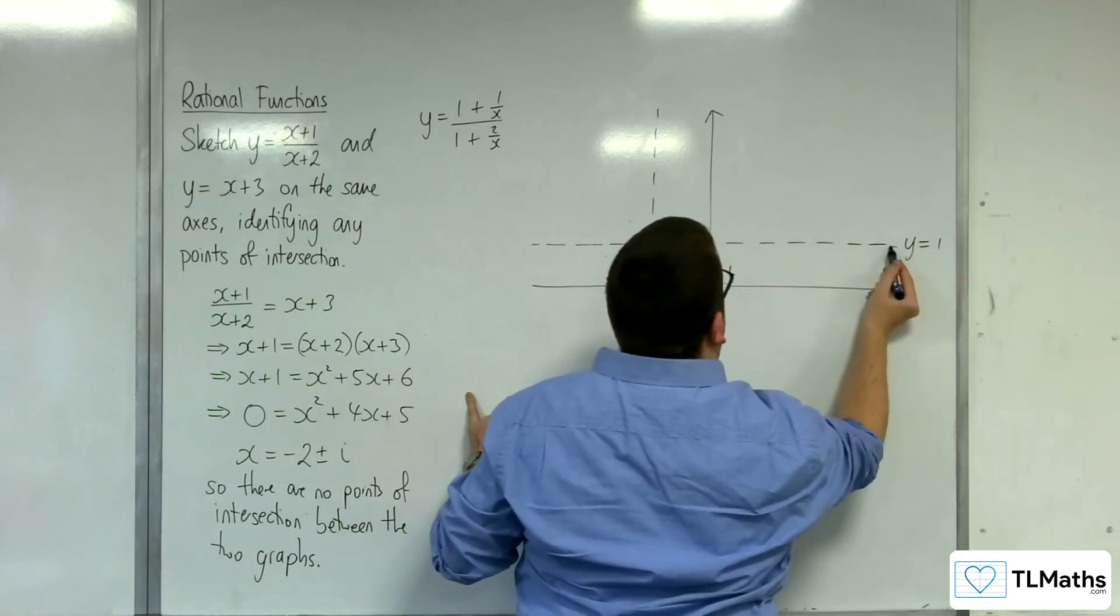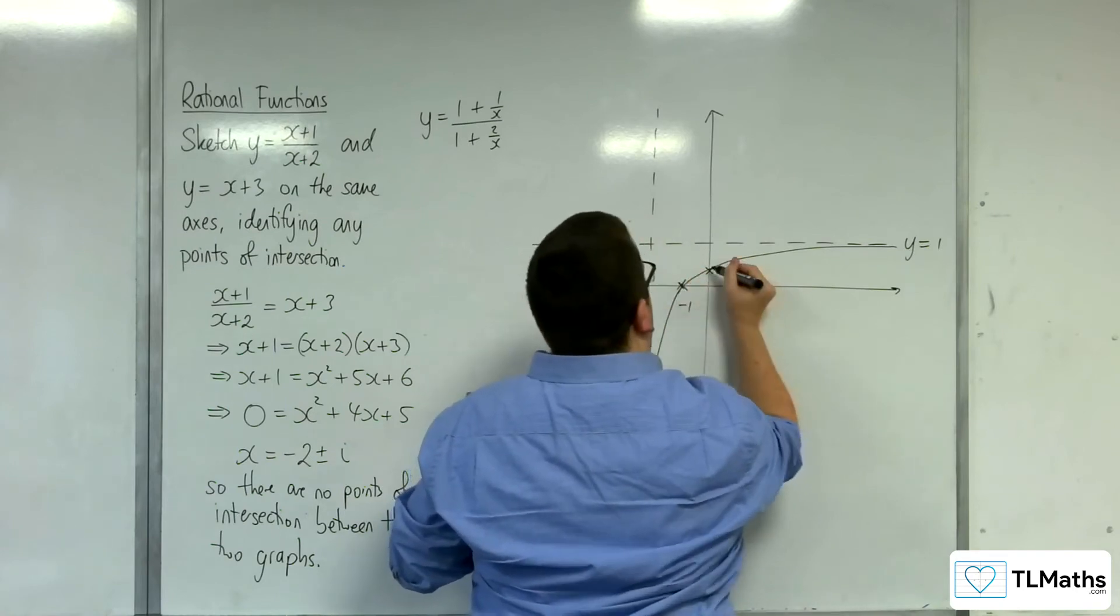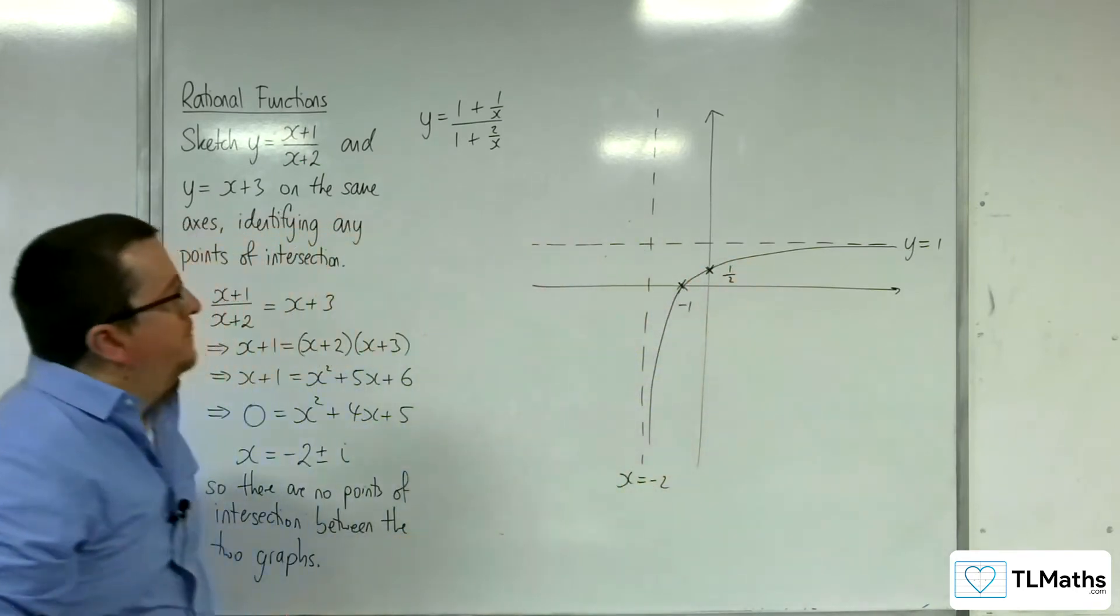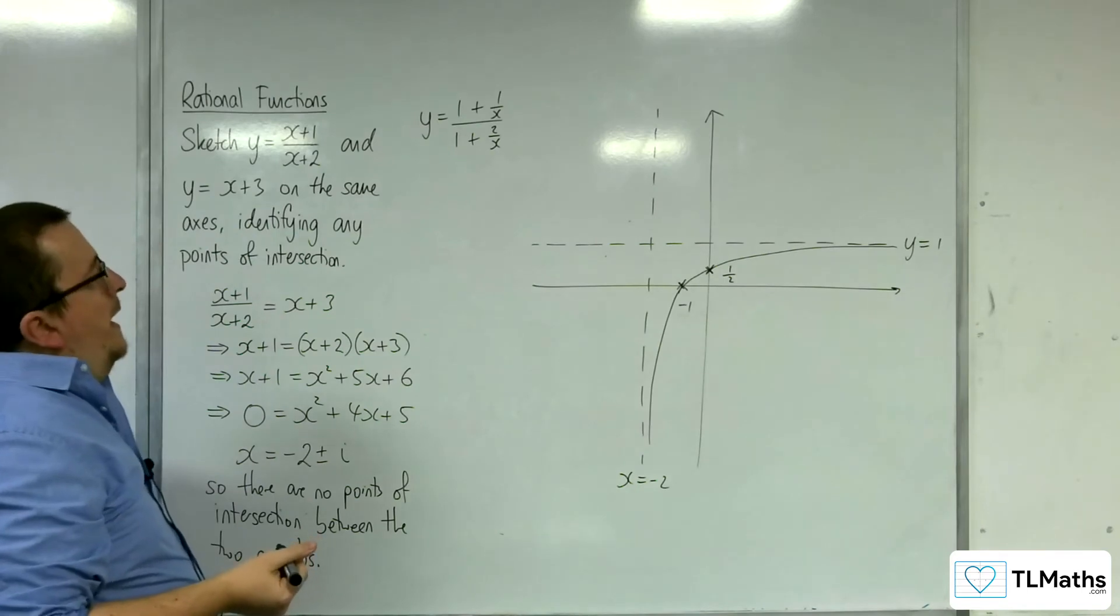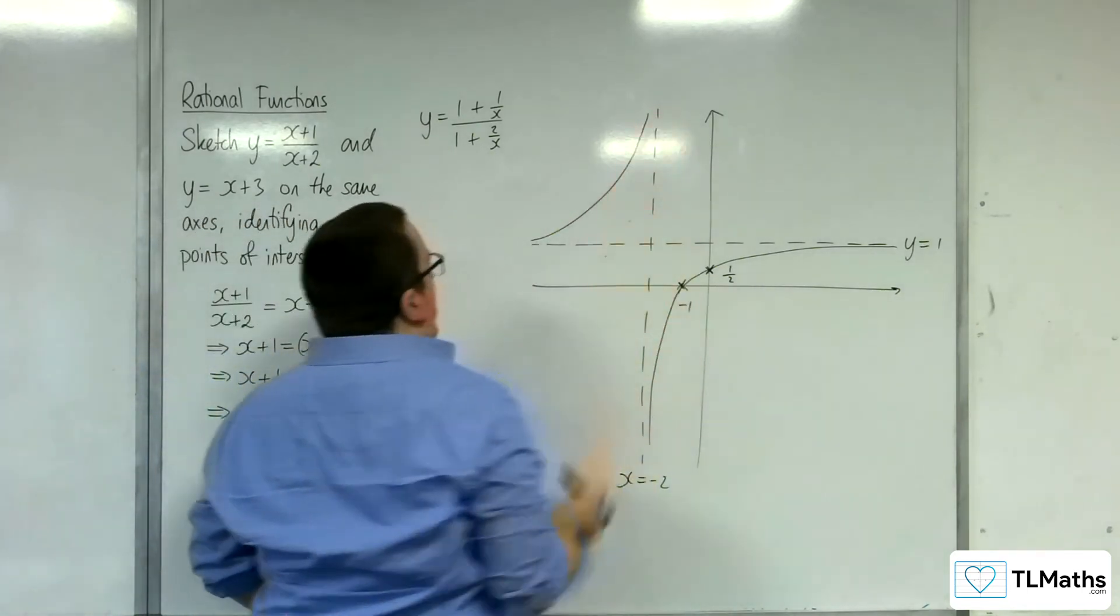So the curve must do something like this. Let's marry up my points of intersection there. And the rest of the graph is up here, once we've got it. There we are.